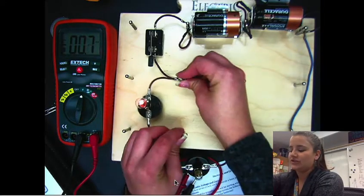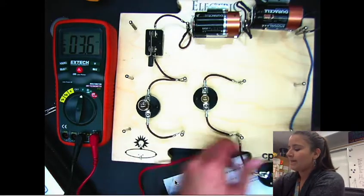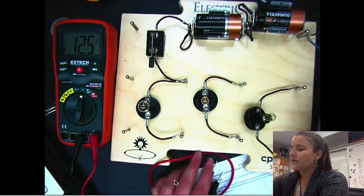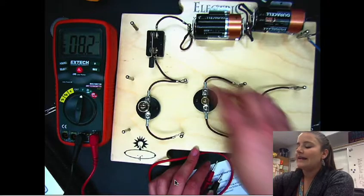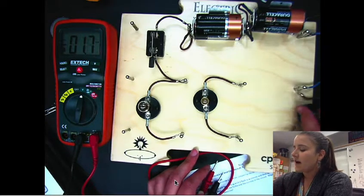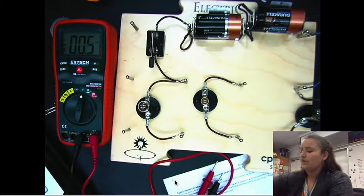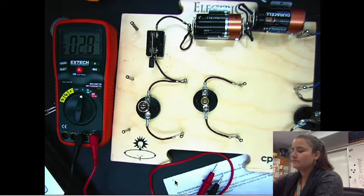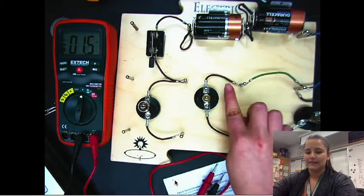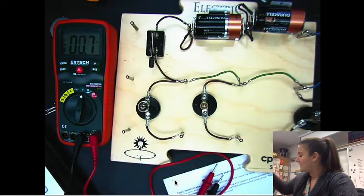Right now all of my bulbs are in parallel. So my electricity, it can go through there and then I'm gonna give it some options. It can either flow into this light bulb or over to this light bulb, and then it can flow into this light bulb or over to this one, again making sure that we're always completing the circuit.